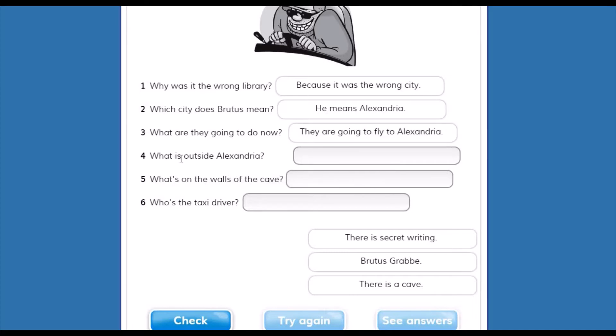Number four. What is outside Alexandria? ¿Qué está afuera de Alexandria? There is a secret writing. Brutus grave. There is a cave. There is a cave.